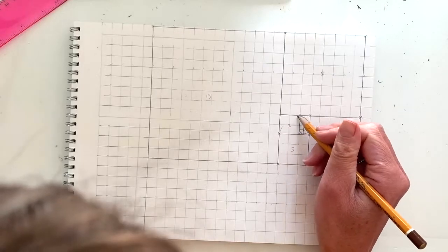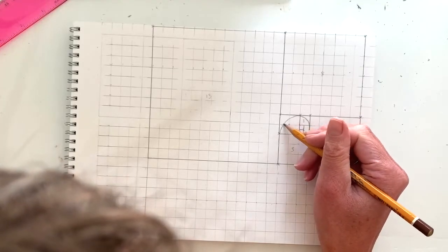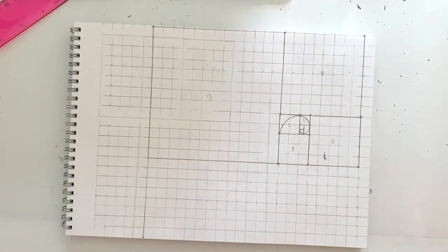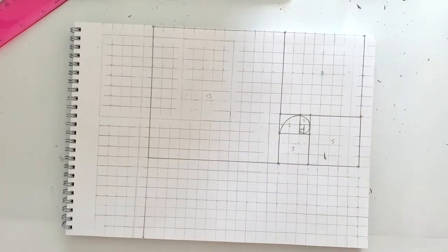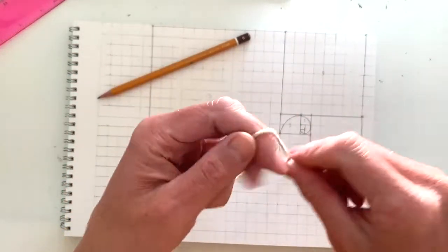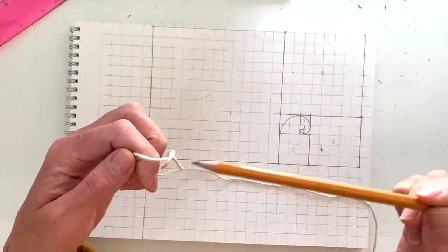Now I'm using my free hand to draw my spiral, making sure that it curves from the corner to the corner. But as my spiral gets bigger, I'm going to need to use some tools. Ideally, using a pair of compasses is the best thing at this kind of scale.